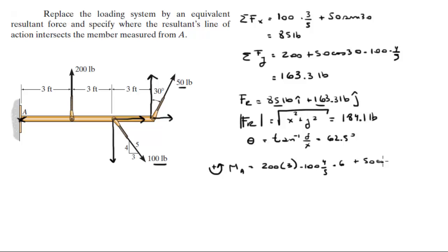Plus 50 cosine of 30 times 9, because the X components don't form any moments since they're moving directly away from A. So the moments at A are a total of positive 510 foot pounds going counterclockwise.